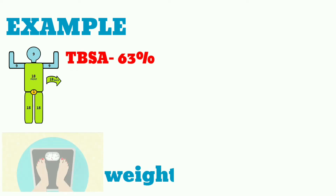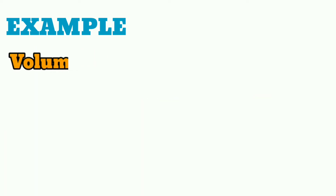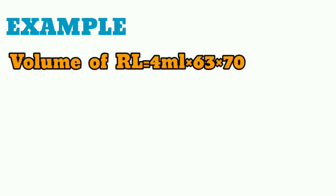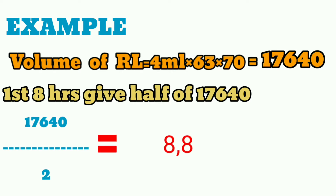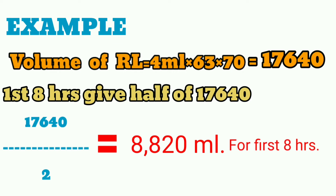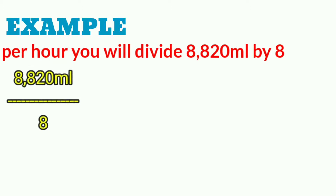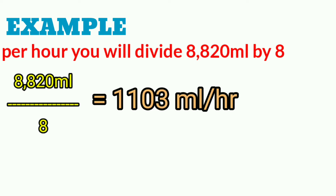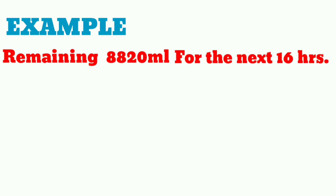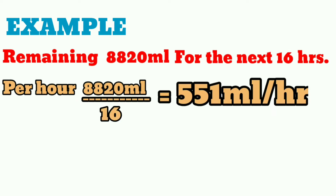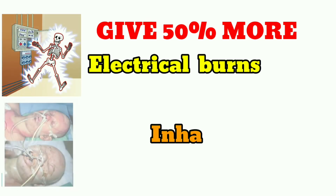For example, if a patient has a BSA burn of 63% and weighs 70 kg, using the formula: volume of Ringer's lactate = 4 mL × 63 × 70 = 17,640 mL. For the first eight hours, give half: 17,640 ÷ 2 = 8,820 mL. Per hour that equals 8,820 ÷ 8 = 1,103 mL/hour. The remaining 8,820 mL is given over the next 16 hours: 8,820 ÷ 16 = 551 mL/hour. Give 50% more in electrical burns and inhalation injury.